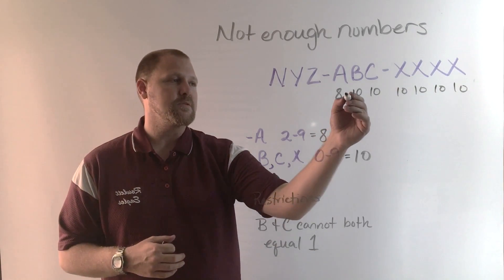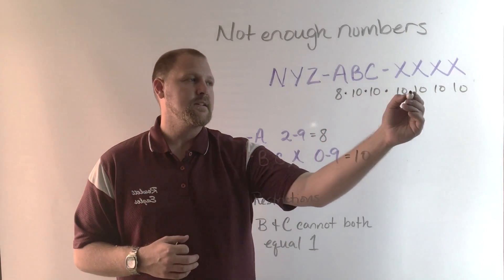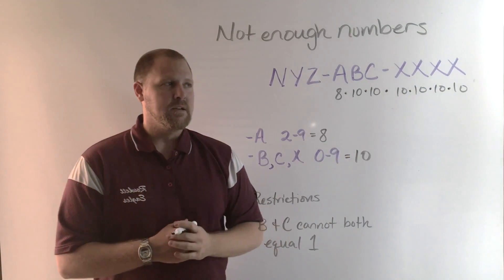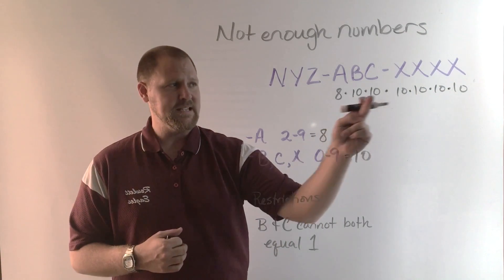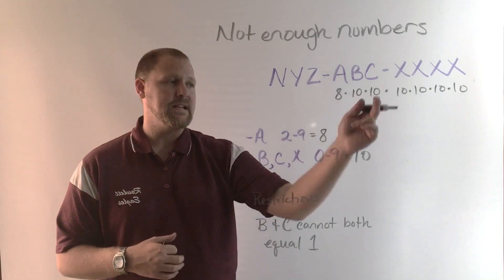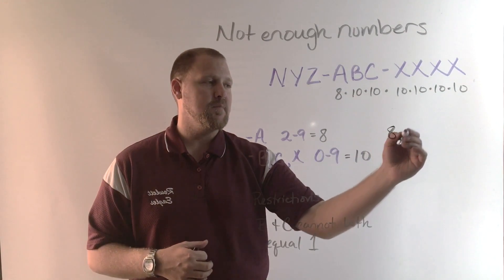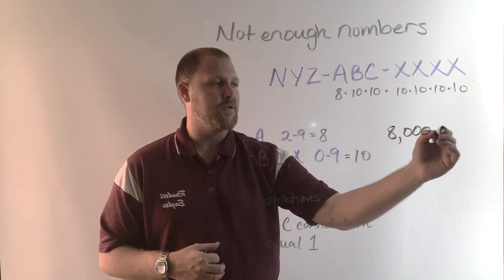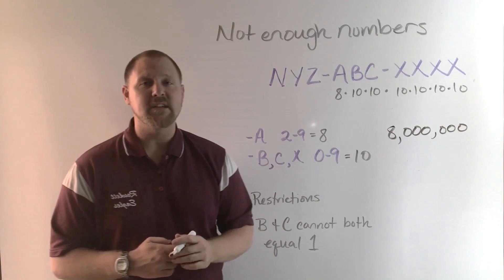The counting principle says we need to multiply these seven numbers. If you take 10 times 10, six times, that's a million. And eight times a million is 8 million 7-digit telephone numbers inside of a single area code.